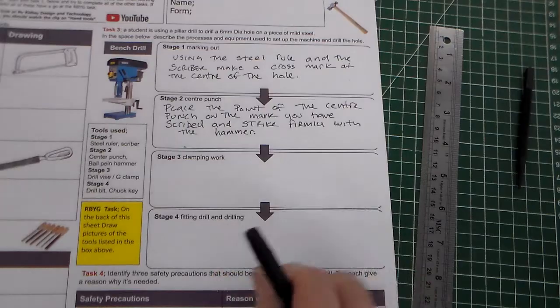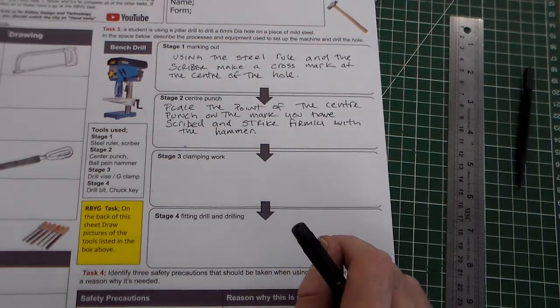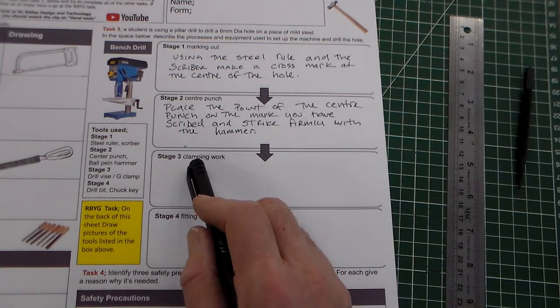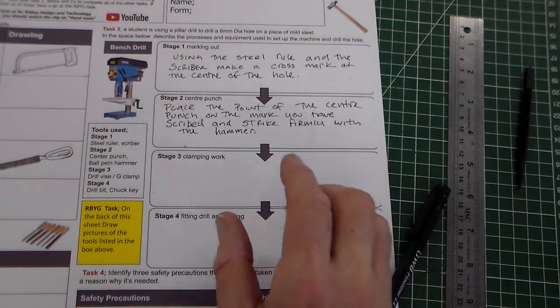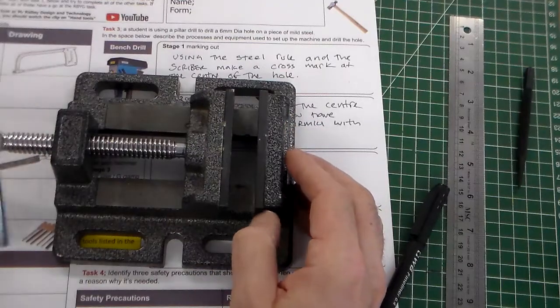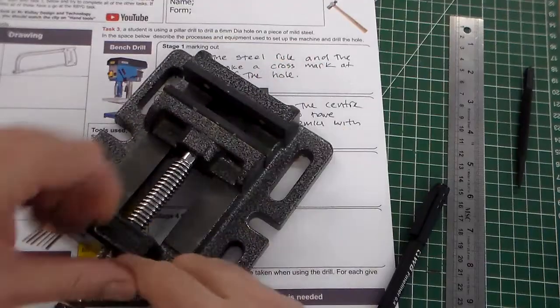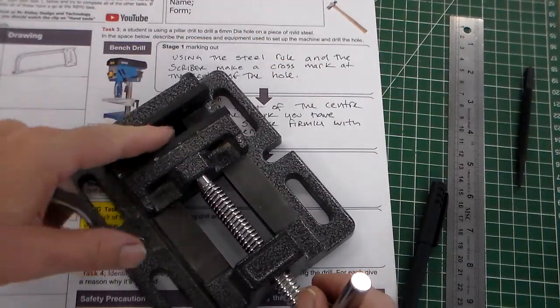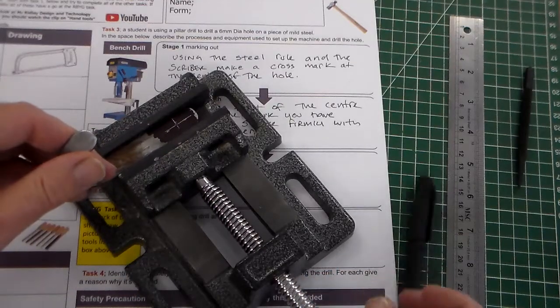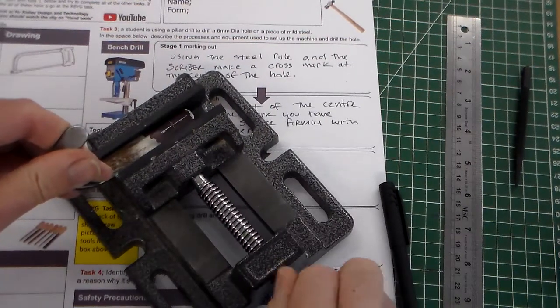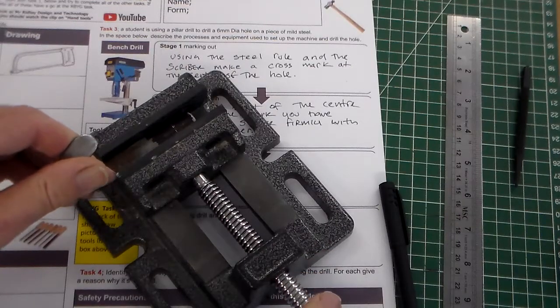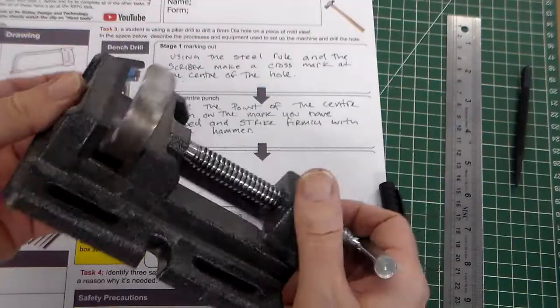So, we've now got the center punch mark there. And the next thing we can do is clamping the work, stage three clamping the work. So, we would place the steel strip, and the tools it says, a drill vise and G-clamp. So, a drill vise, we have a drill vise here, and the drill vise is simply done up by turning this screw thread here, which opens and closes these jaws. We'd put a piece of work in here, sometimes we put a small scrap of soft wood underneath, just to hold it, and we can just do this up, and move that down, and tighten that into place. So, we can see work is being held there, ready for drilling, in the drill vise.